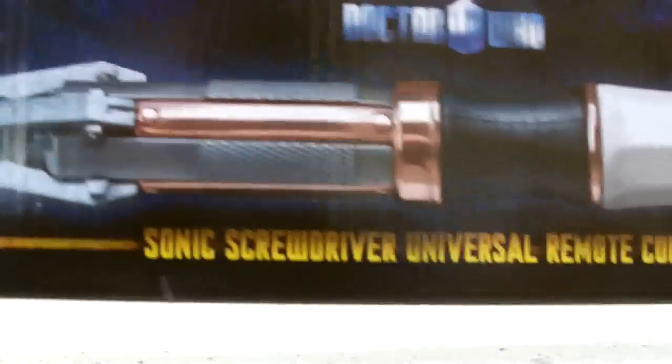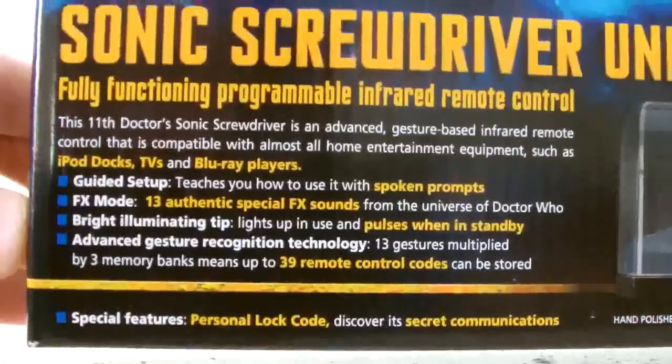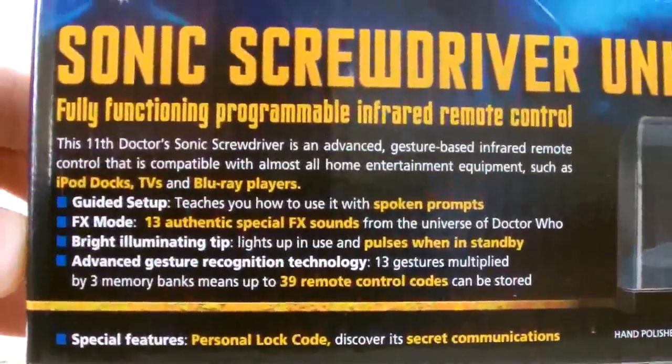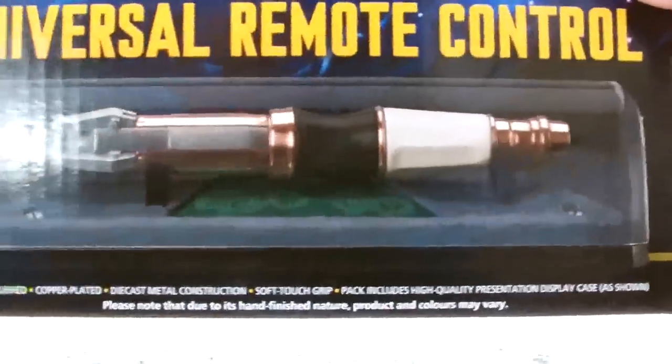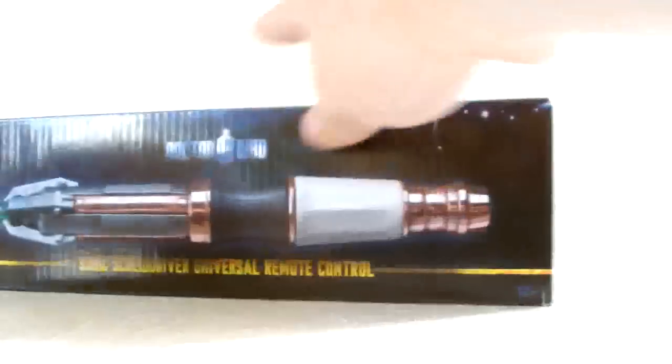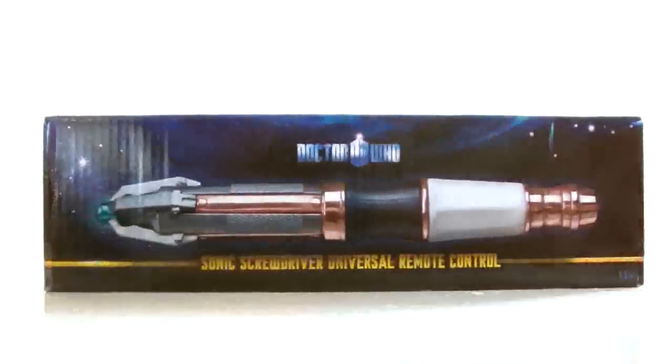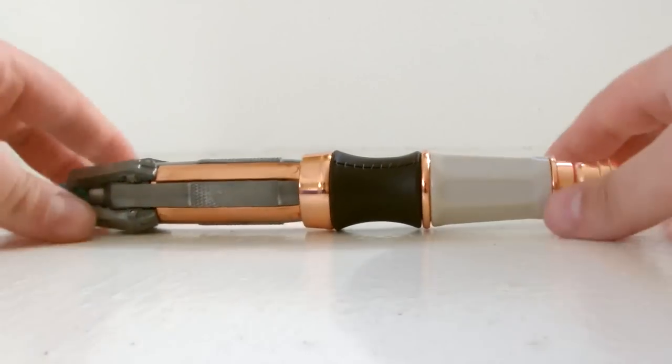So the box is fairly basic with a few pictures of the screwdriver and the bog standard legal garb. However it is made of sturdy cardboard and should offer the screwdriver and its casing great protection if left in storage. But anyway that's enough about the box, let's open it up and take a closer look at the universal remote.